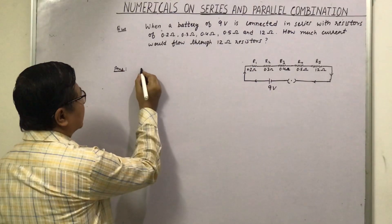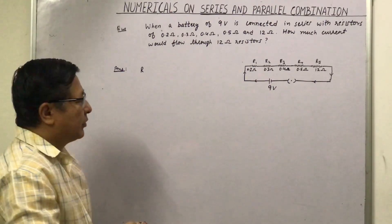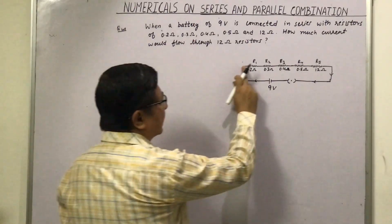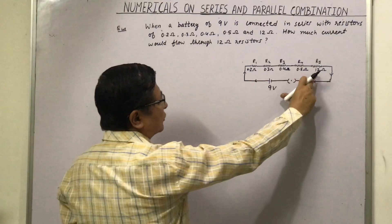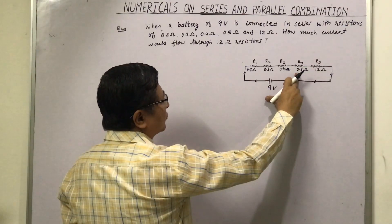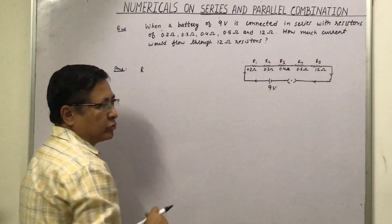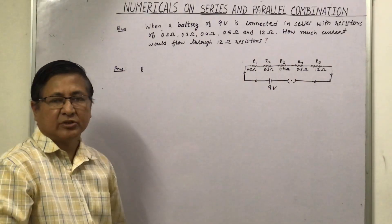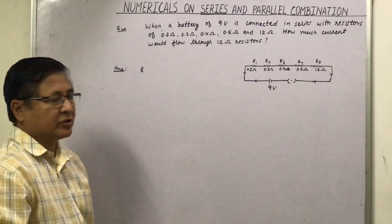First we will find the resistance in series, because in series the same current flows through all the resistors. So whatever amount of current is flowing through 12 ohm, same will flow through 0.5 ohm, same will flow through 0.4, 0.3 and 0.2 ohm. Because in the series combination, as we know, the same amount of current flows in all the resistors.